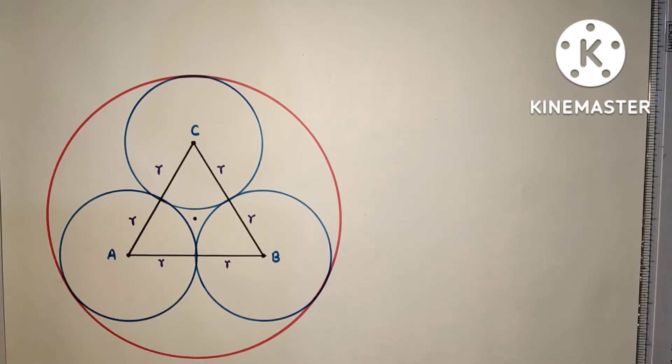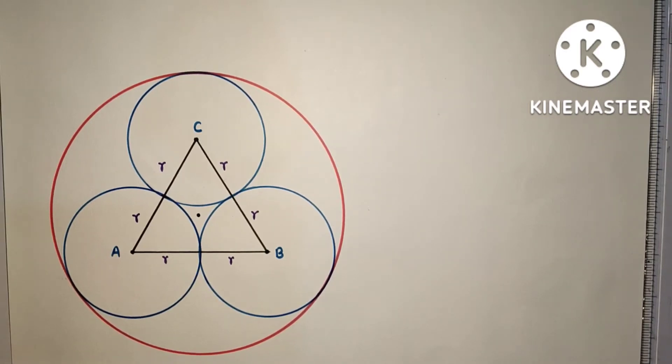So in method one, this triangle ABC is an equilateral triangle. Each side of the triangle will be 2R, 2R, and 2R. And this is the midpoint, this is the midpoint. So if we join this through this center it will be median, and this will also be median.